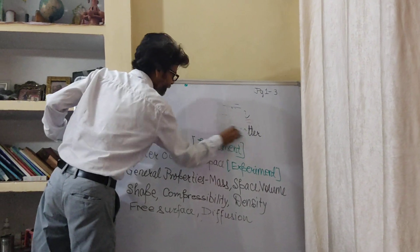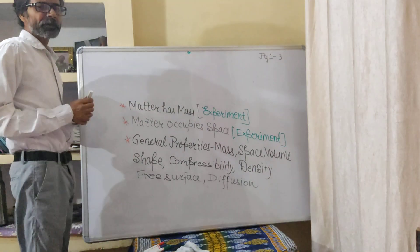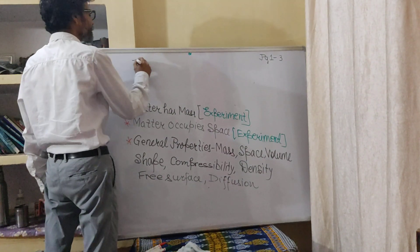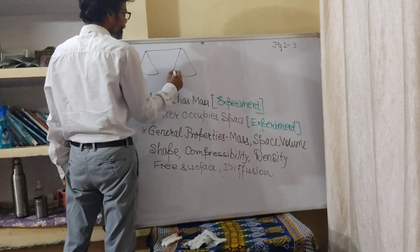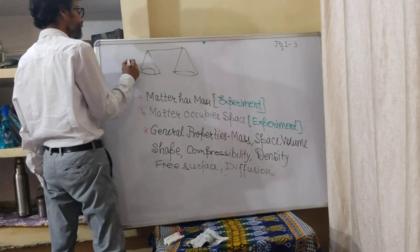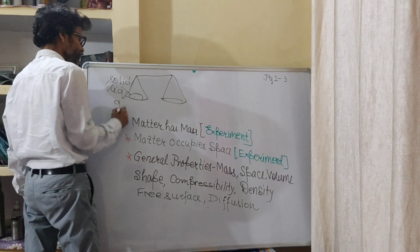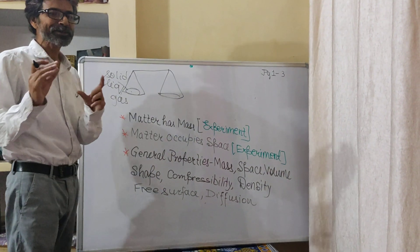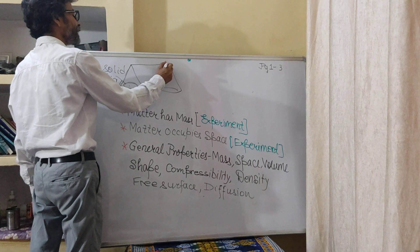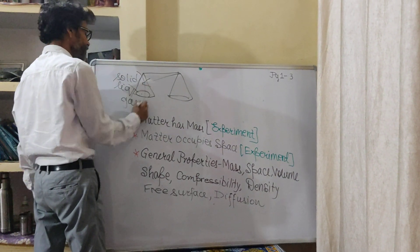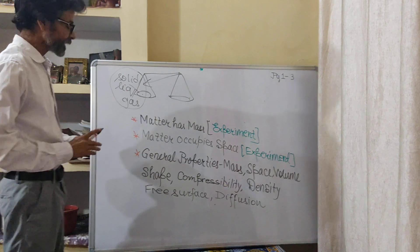To talk about the matter, firstly about the mass part — to check whether matter has mass, we can conduct a simple beam balance experiment. On a beam balance, on one side of the balance, we can keep the mass in different states, like in the solid, in the liquid, and in the case of gases, we can use a balloon by filling the air in the balloon. In all three cases, we will see that the beam of the balance is tilting into the side where the matter — the solid, liquid or gas — is kept. By this experiment, we show that matter has mass.